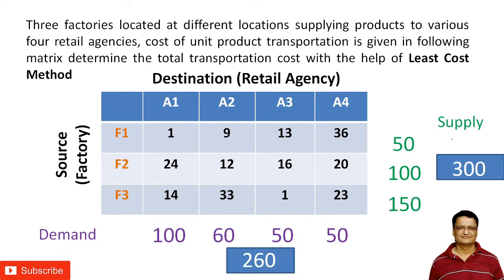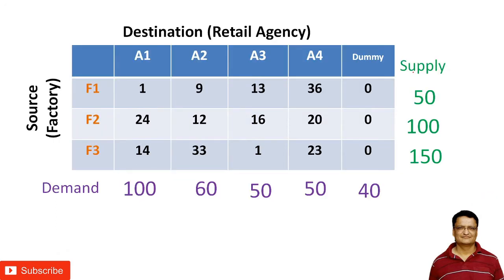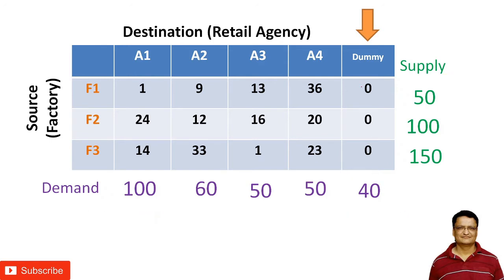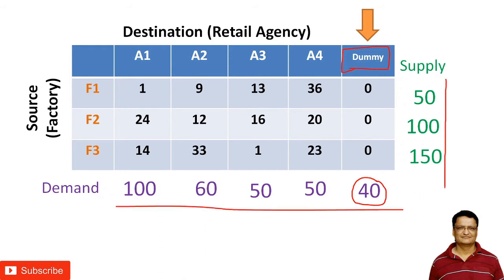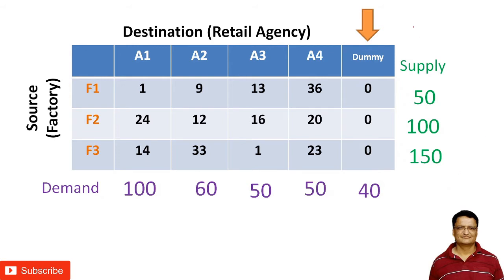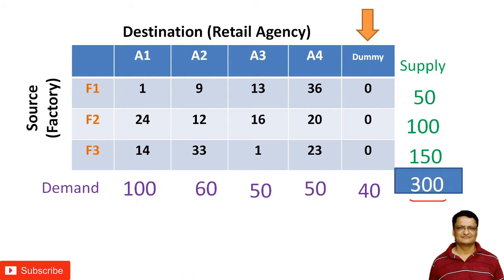We cannot use the regular least cost method; we have to modify this matrix. We are going to add a dummy column because supply is greater than demand. If demand had been greater than supply, we would have added one extra row instead. This dummy requirement is assigned a value of 40, making both the total supply and total demand equal to 300.